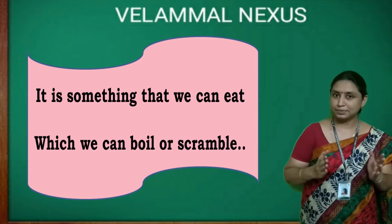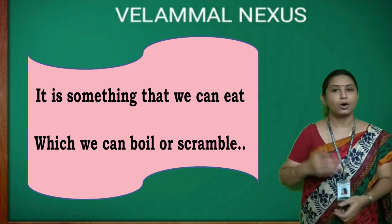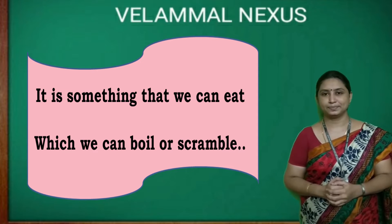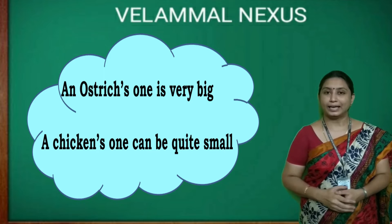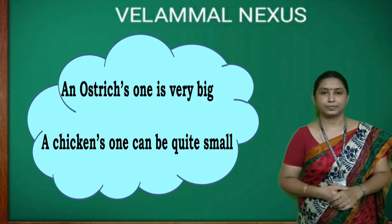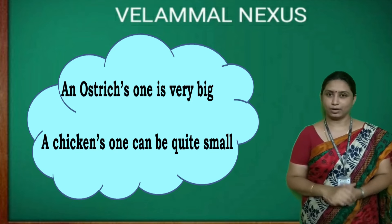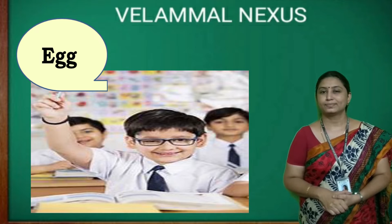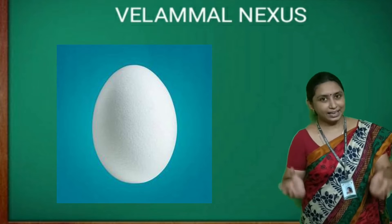It is something that we can eat, which we can boil or scramble. Can you guess? Let me give you more clues. An ostrich one is very big, and a chicken's one can be quite small. What is it? Egg! Yes, you are right — it is an egg.